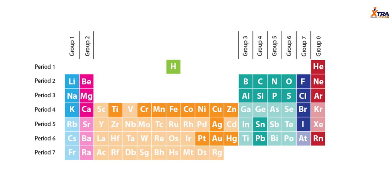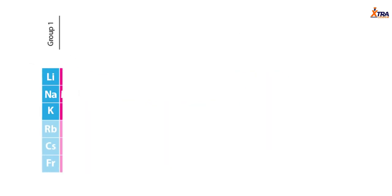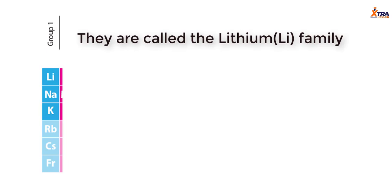We have group 6, group 7, and group 0 which is group 8. Each of these groups will be discussed individually — the elements belonging to those groups and some of the reactions they can undergo. We're starting with group 1. Group 1 elements are called the lithium family because lithium is the first member of the group. We pick the first element in the group and name the group after that element.